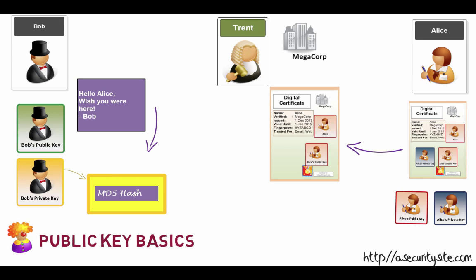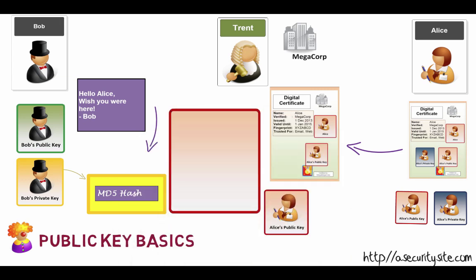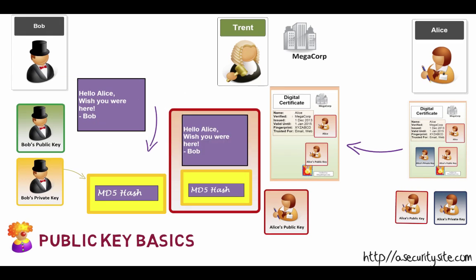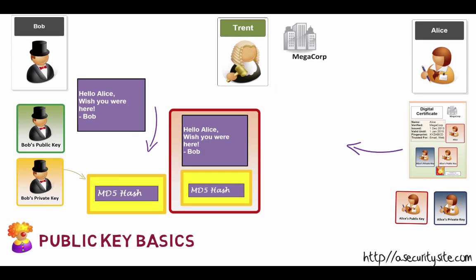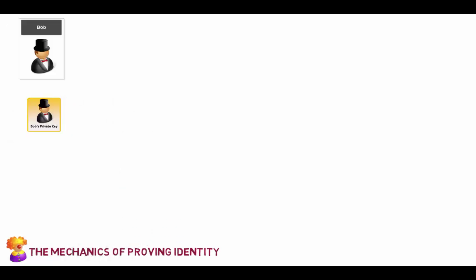We export the certificate so that we have a digital certificate with Alice's public key on it — that can be transmitted to anyone. Bob will take Alice's public key and encrypt the message and the encrypted hash with it, then send the whole thing over to Alice's side.